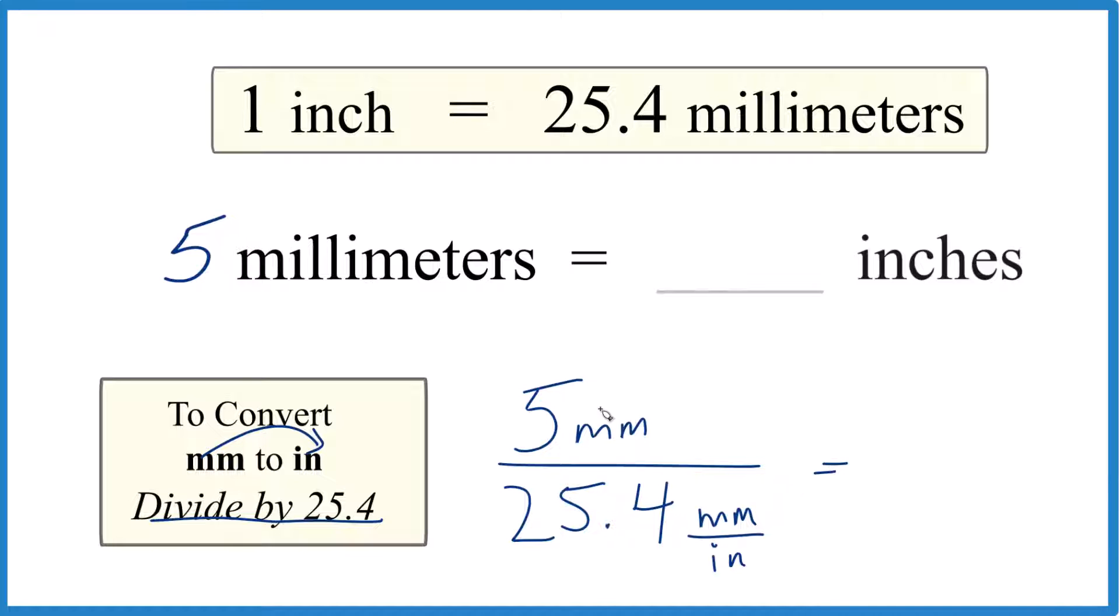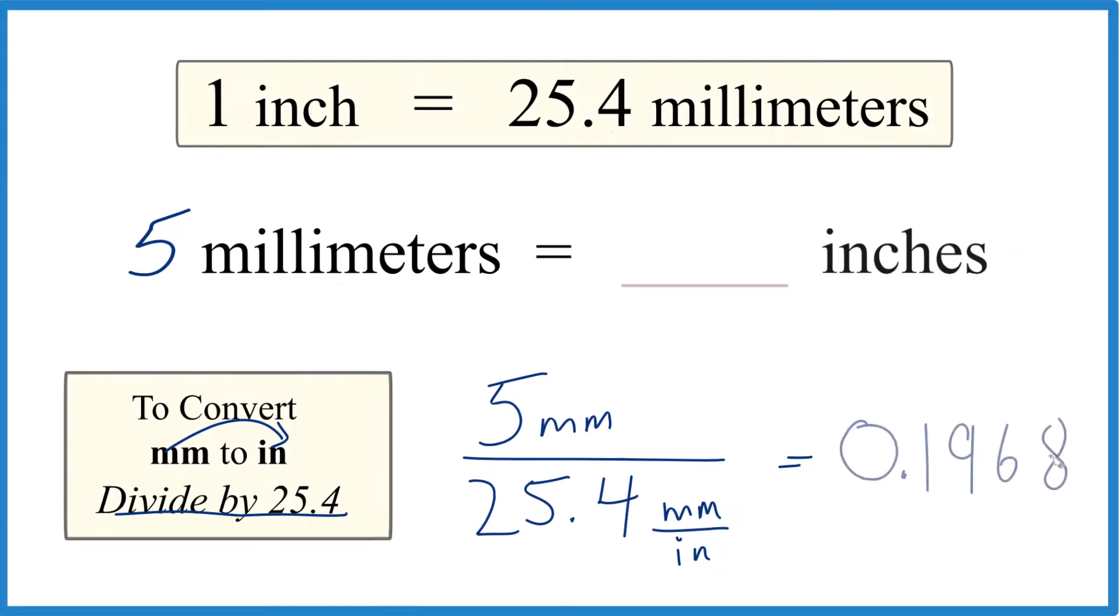So all we do, we take five divided by 25.4, and we end up with 0.1968. So let's round that to 0.197.